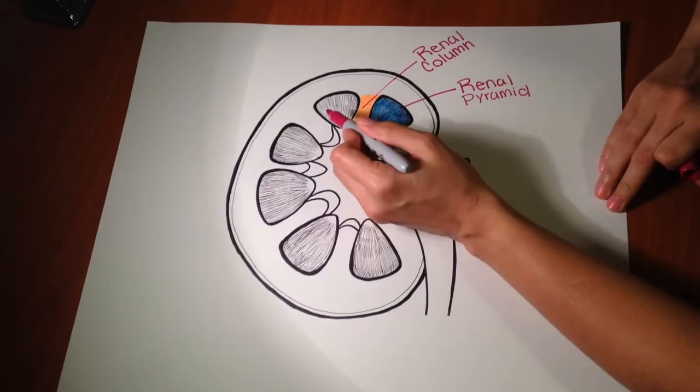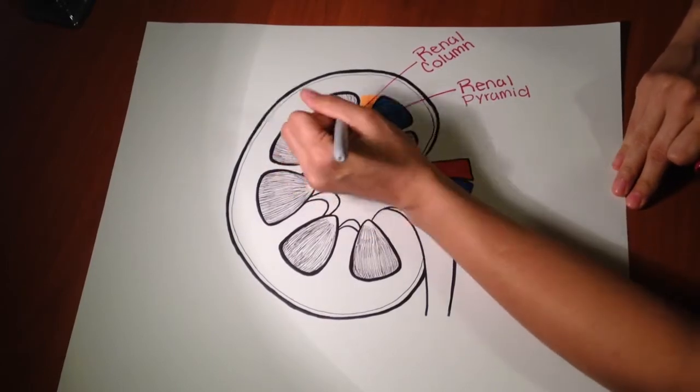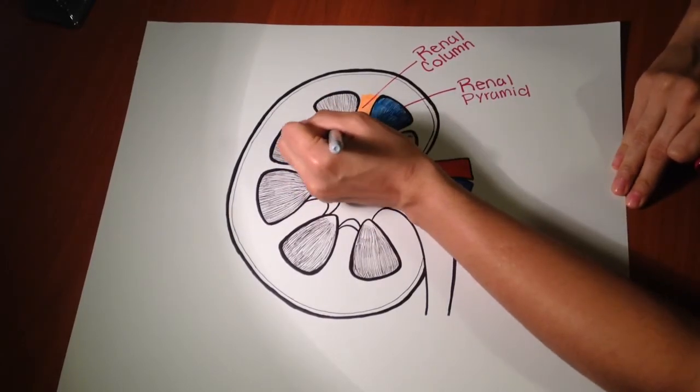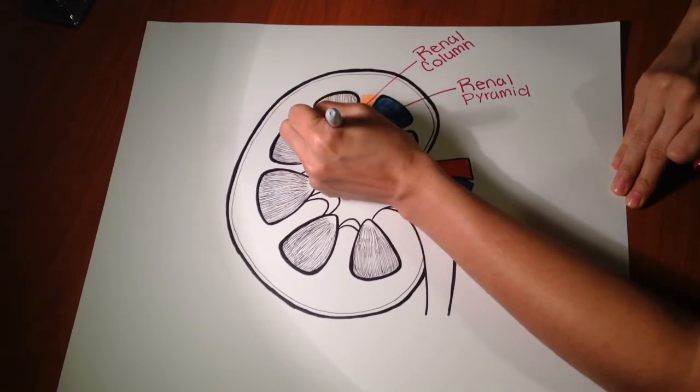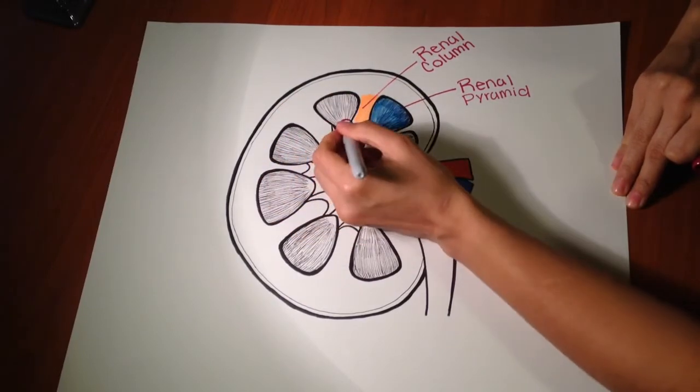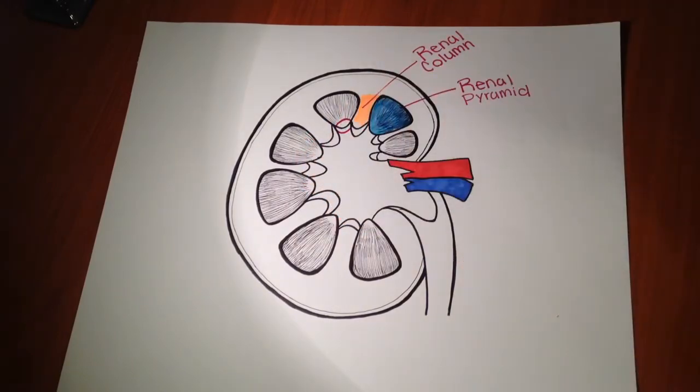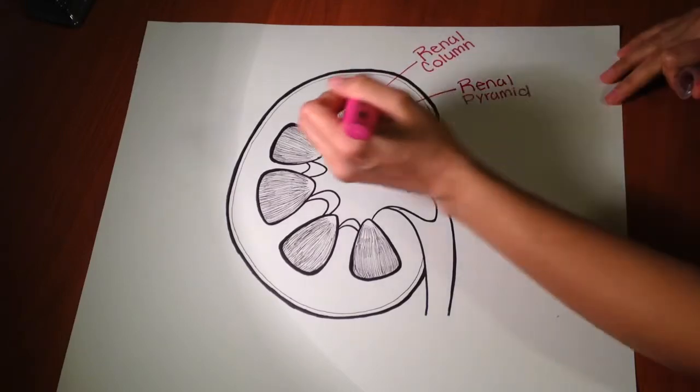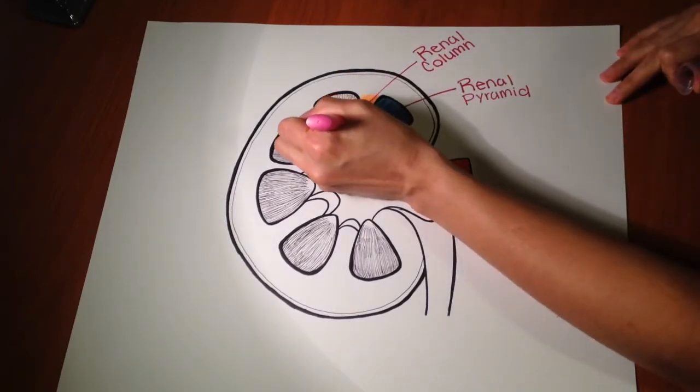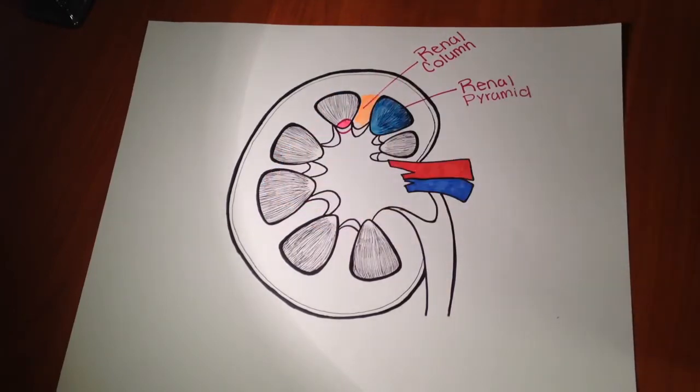Next we're gonna look at the very tip of the pyramid. So right here if you look at the very tip, this is the renal papilla right here. And basically that is the structure that secretes urine. So right here this little area on the pyramid is the renal papilla.